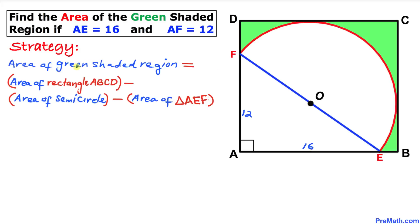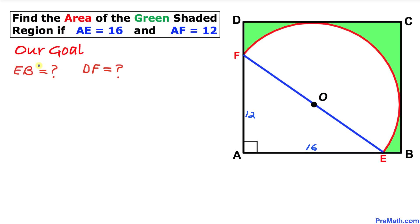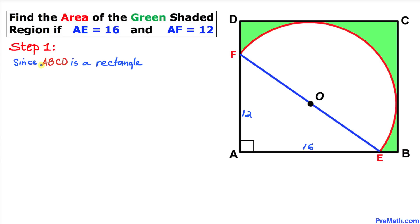Here is our action plan. The area of the green shaded region equals the area of rectangle ABCD minus the area of the semicircle and minus the area of triangle AEF. Our main task is to find line segment EB and line segment DF before doing anything else.